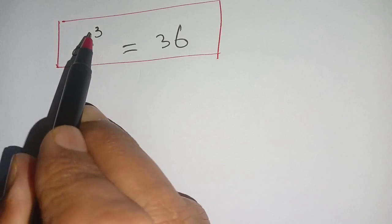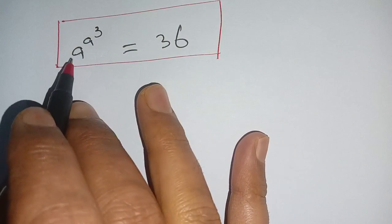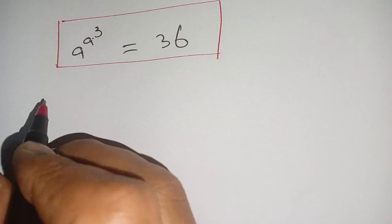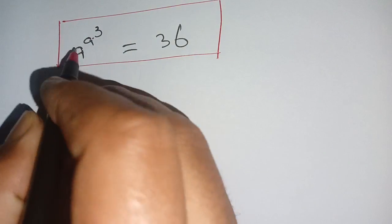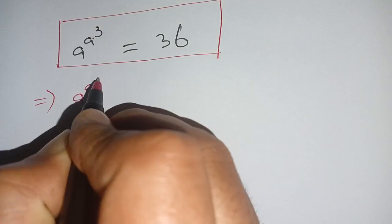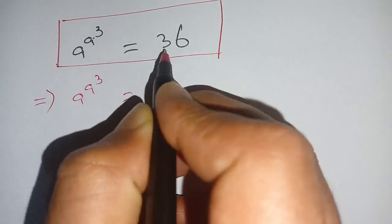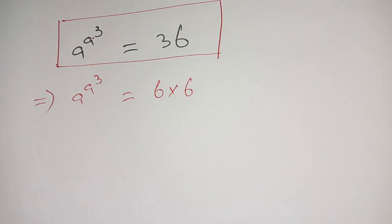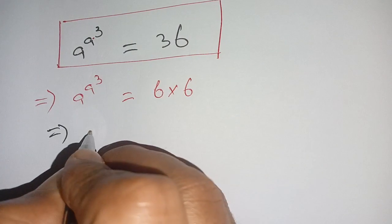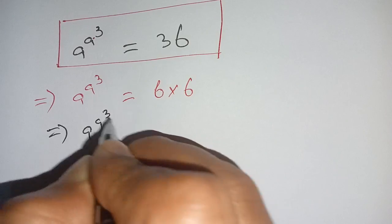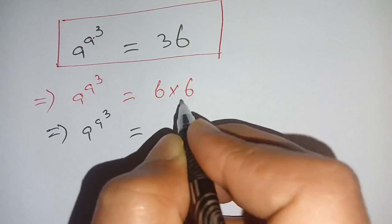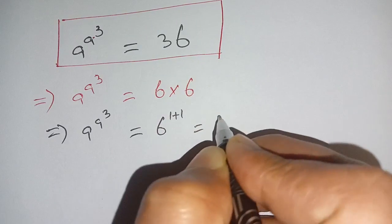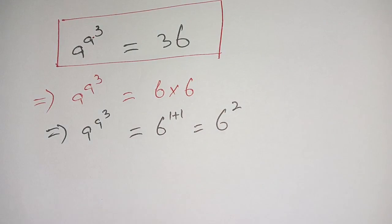Hello everyone. In today's video we are going to solve this exponential problem: a power a power 3 is equal to 36. We have a power a power 3 is equal to 36, which can be written as 6 times 6, and on the next step we can write this as 6 power 1 plus 1, which is equal to 6 power 2.